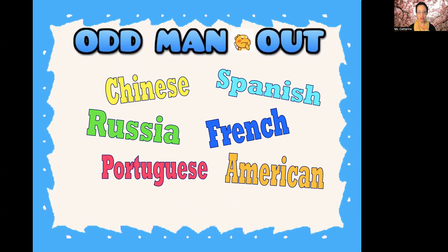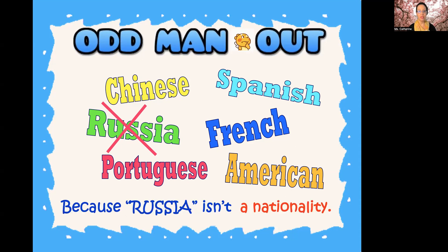Which word is the odd man out here? We have: Chinese, Russia, Portuguese, Spanish, French, and American. Which one does not belong? Russia is the odd man out. Why? Because Russia isn't a nationality — Russia is a country. What would be the nationality for people in Russia? That's right — Russian.